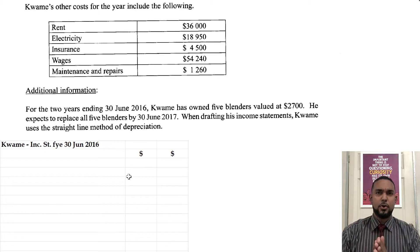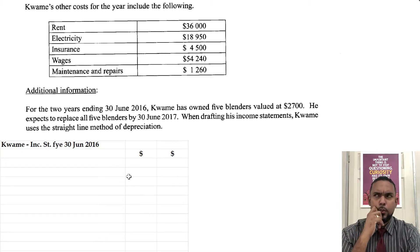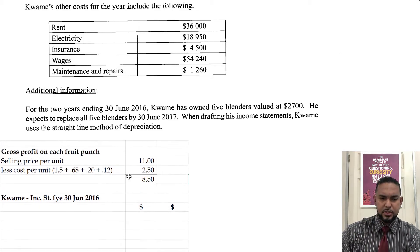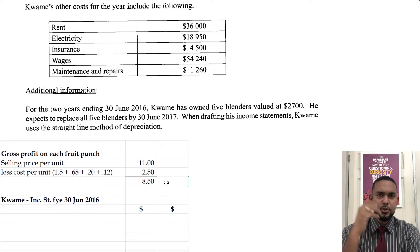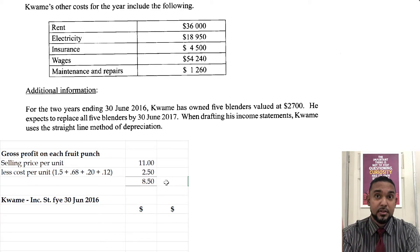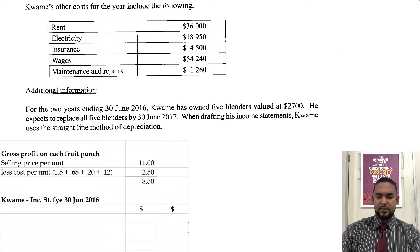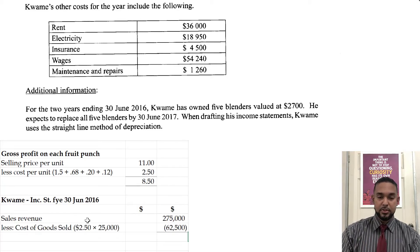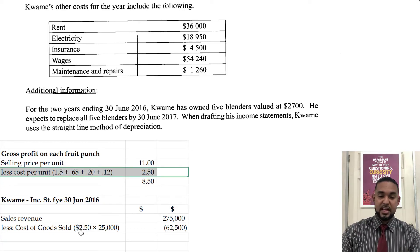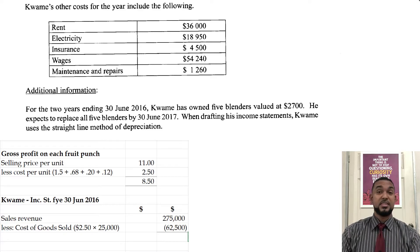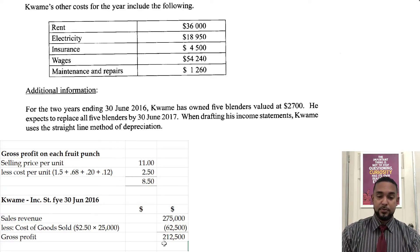Even if you're not sure exactly what to do for the whole thing, do what you can. We need an income statement. We already calculated gross profit on each item, so maybe we don't have to show sales minus cost of goods sold for all 25,000 — maybe we could start with gross profit. I chose to start with sales revenue of $275,000 minus cost of goods sold. Each unit costs $2.50 and we sold 25,000, so cost of goods sold is $2.50 × 25,000 = $62,500. Overall gross profit is therefore $212,500.